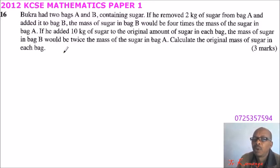Bukna had two bags A and B containing sugar. If you remove 2 kg of sugar from bag A and add it to bag B, the mass of sugar in bag B would be 4 times the mass of the sugar in bag A.